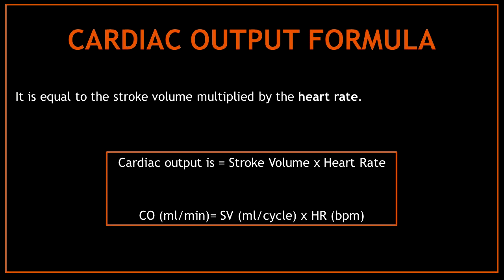Now that we know a few ways to obtain the stroke volume, what is the cardiac output formula? Cardiac output equals stroke volume multiplied by heart rate. This means that to obtain the cardiac output you need the stroke volume and the heart rate.